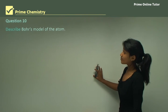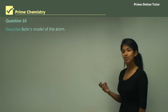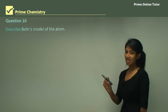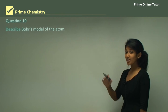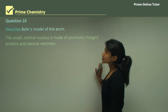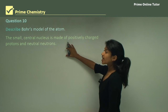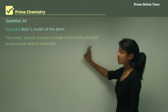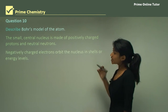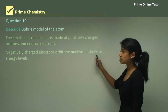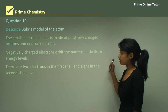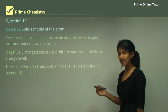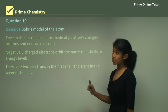Question ten: describe Bohr's model of the atom. His main concept was electron movement around certain energy levels and how electrons do not radiate energy when in a given energy level. You would describe it as follows: the small central nucleus is made up of positively charged protons and neutral neutrons. Negatively charged electrons orbit the nucleus in shells or energy levels. There are two electrons in the first shell and eight in the second shell, increasing further, with an exception for transition metals.